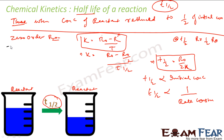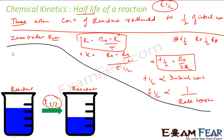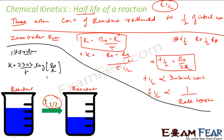Now let's find T½ for first-order reaction. For first order, the formula is K = (2.303 / T) × log(R₀ / R). Remember: for zero order K = (R₀ − R) / T, and for first order K = (2.303 / T) × log(R₀ / R).